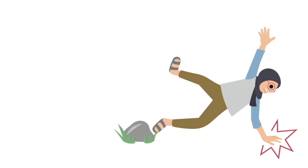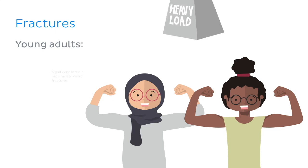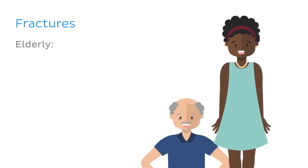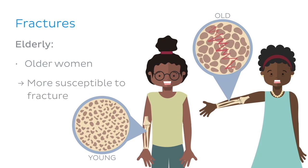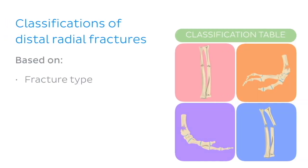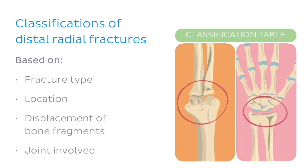Most cases of distal radial fracture tend to involve falling onto an outstretched hand, as we all tend to brace ourselves with our hands when we slip or trip. In the case of young adults, their bones generally tend to have strong structural integrity, meaning significant force is required for such injuries. In the elderly, however, in particular older women, the long bones tend to present significantly reduced bone density and are therefore much more susceptible to fracture. There are several classifications of distal radial fractures based on the fracture type, location, displacement of bone fragments, and the joint involved.